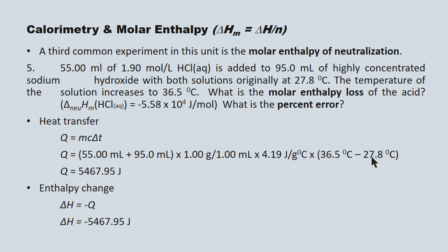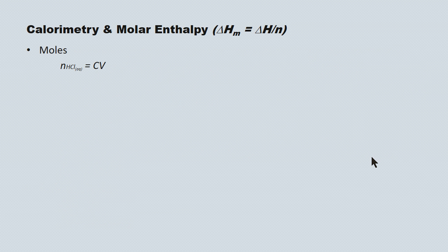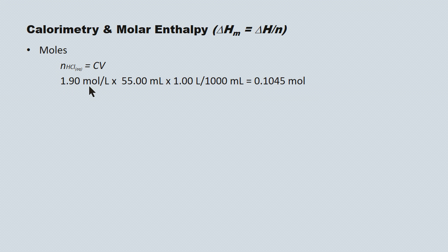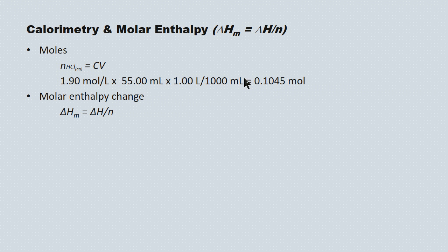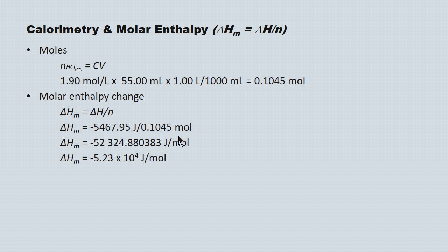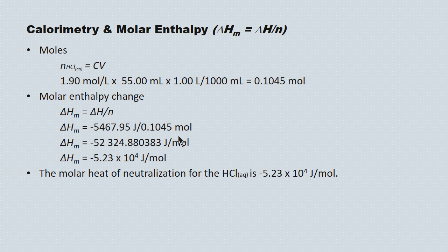The next step is to determine the number of moles of acid used in the neutralization. We use a formula from solution stoichiometry: moles of acid equals its concentration times its volume. The concentration is 1.90 moles per liter, and the volume of acid alone was 55.00 mL, with a conversion factor to get from mL to liters — giving 0.1045 moles of hydrochloric acid. The molar enthalpy change — delta HM equals delta H over N — gives a molar enthalpy change for the acid of negative 5.23 times 10 to the 4 joules per mole. The molar heat of neutralization for the acid is negative 5.23 times 10 to the 4 joules per mole.